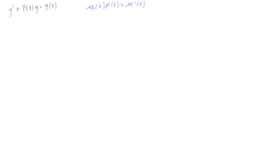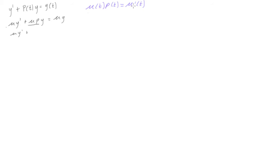To save time I'm going to drop writing the t's — they are still there, I might bring them up later. So we multiply both sides: we have mu times y prime plus mu times p times y is equal to mu times g. But we said that mu times p equals mu prime, so we can write this again as mu times y prime plus mu prime times y is equal to mu times g.